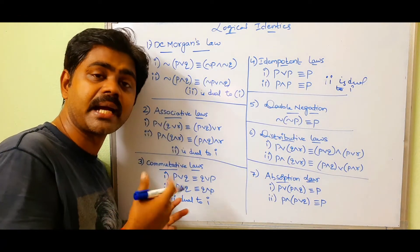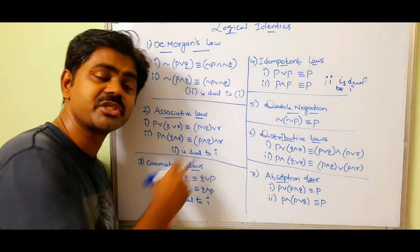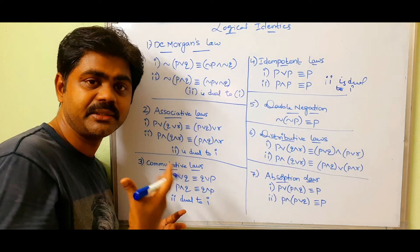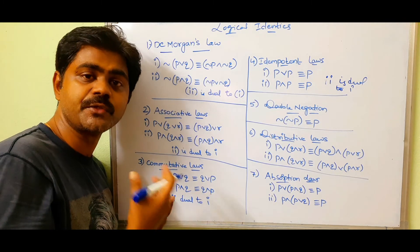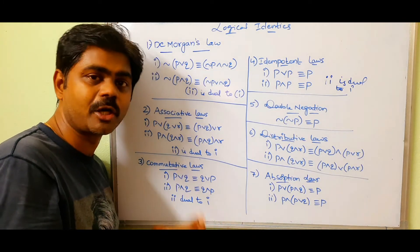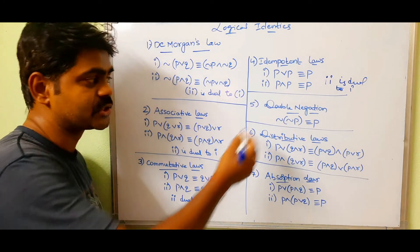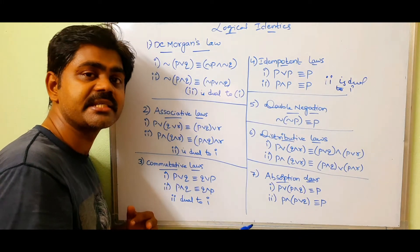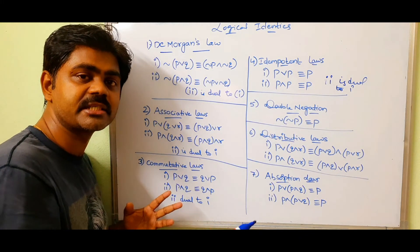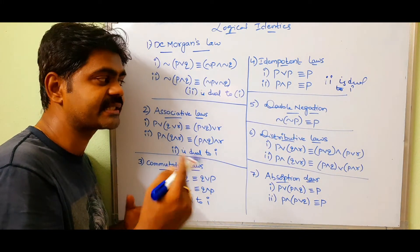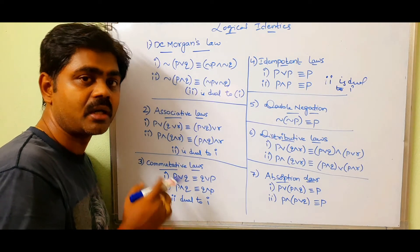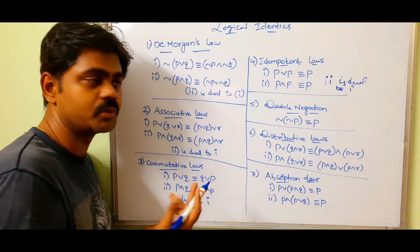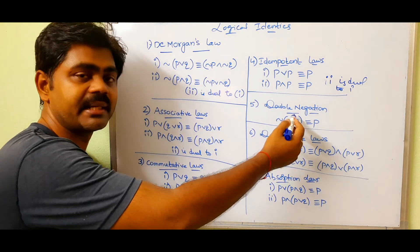The only principle to which we cannot apply duality is double negation. For double negation we can't apply duality because we don't have any OR or AND operator. Double negation states: negation of negation P — the two negations cancel and we get P. Similarly, negation of negation Q equals Q.